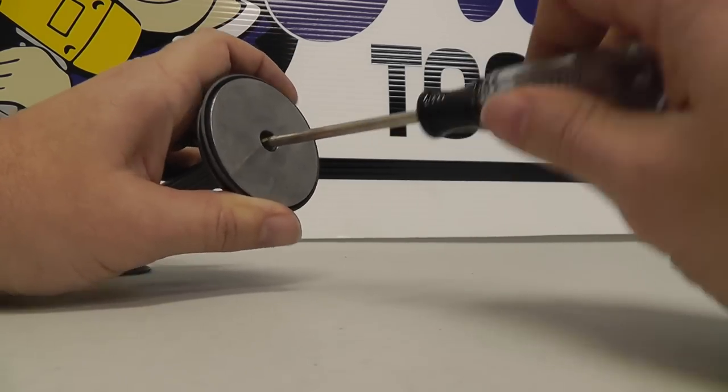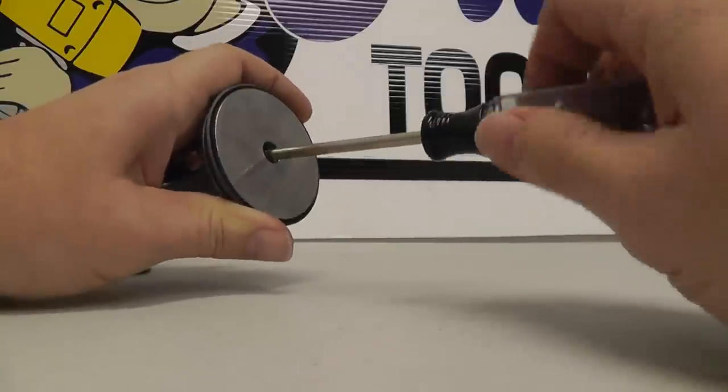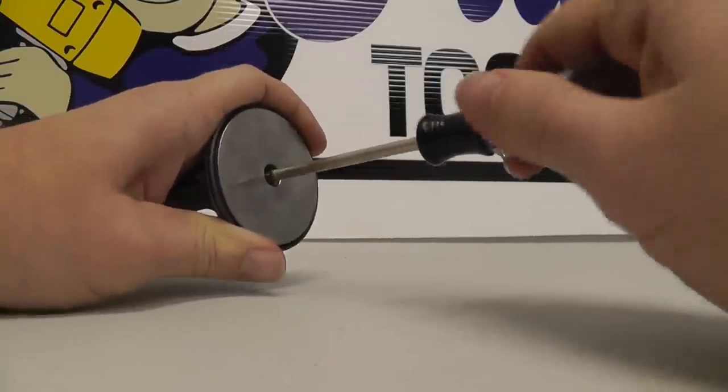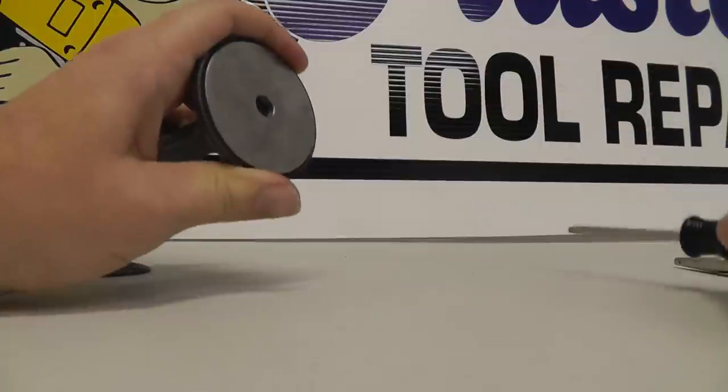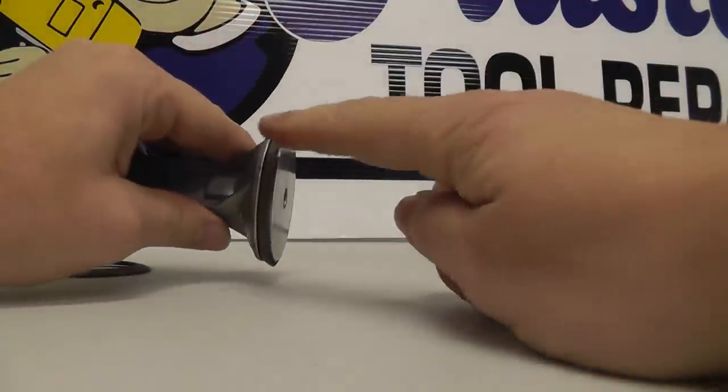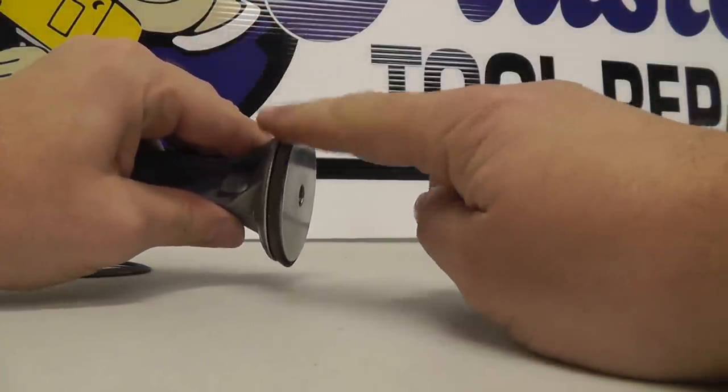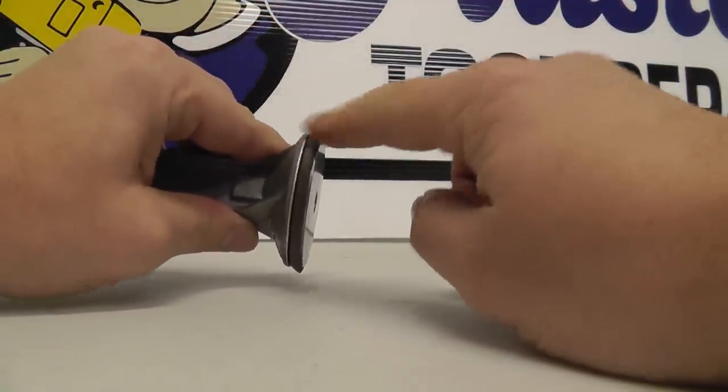So you tighten this down, the compression ring will bend in, and then the motion from the piston head going through the cylinder will form it to look like your original one. Even if it's flat, that's okay.